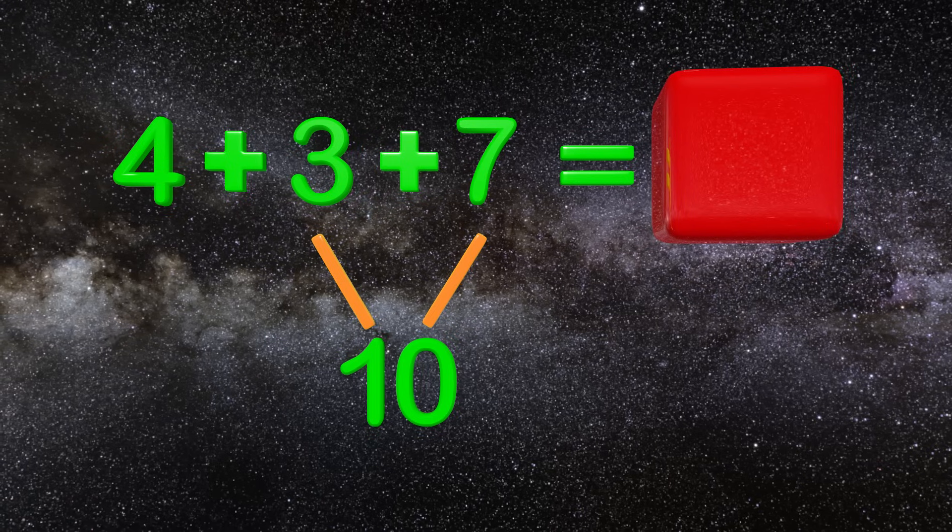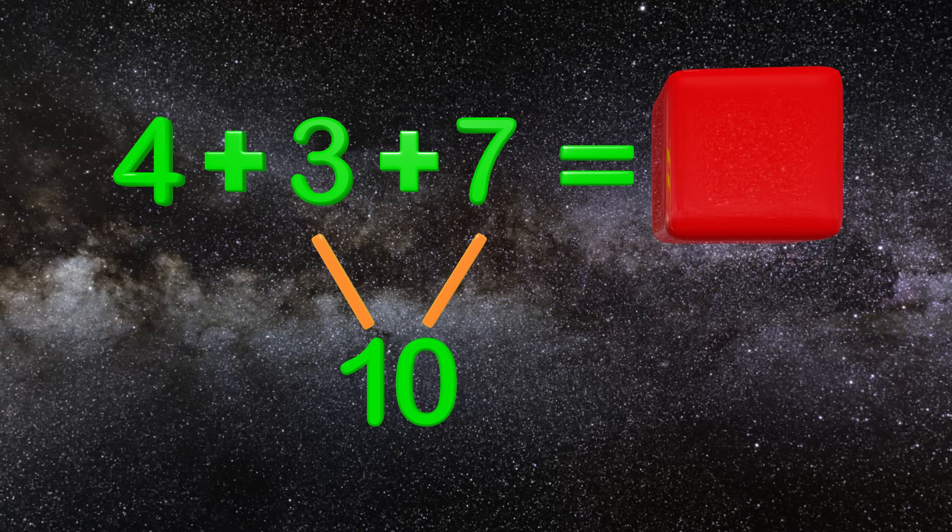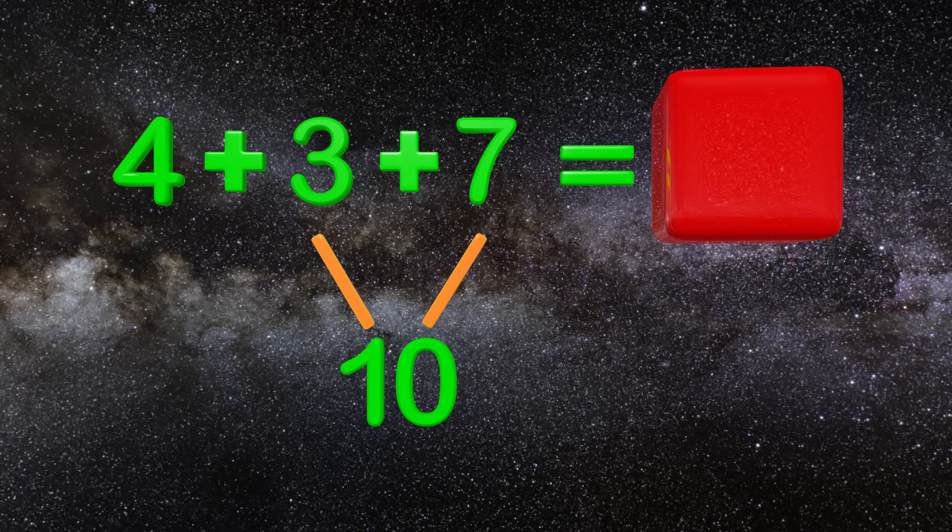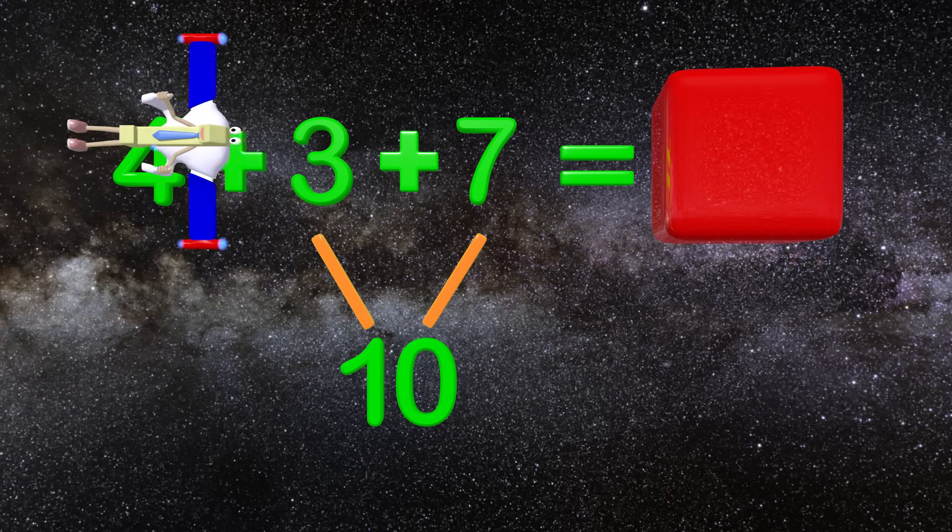So in this problem 3 and 7 is 10 and 10 plus anything is super easy. We know that 10 plus 4 is 14.